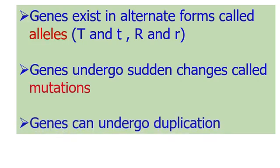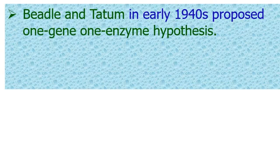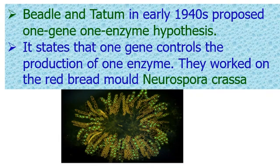Genes can also undergo duplication. Beadle and Tatum, in the early 1940s, proposed the one gene one enzyme hypothesis. It states that one gene controls the production of one enzyme.